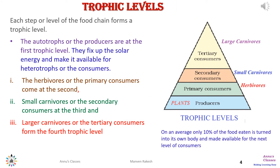Each food chain has its own steps or levels, called trophic levels. The bottommost is the autotrophs or the producers, which fix solar energy and make it available for the heterotrophs or consumers. Then come the primary consumers, followed by the secondary and tertiary consumers. At each level, there is a loss of energy when it is transferred from one trophic level to the next.